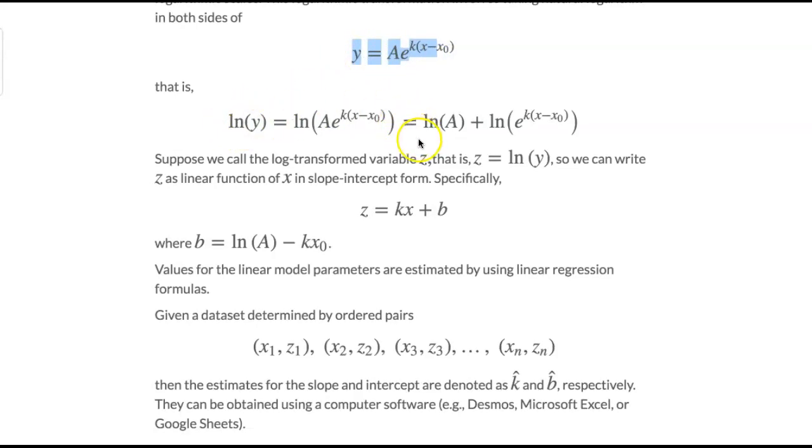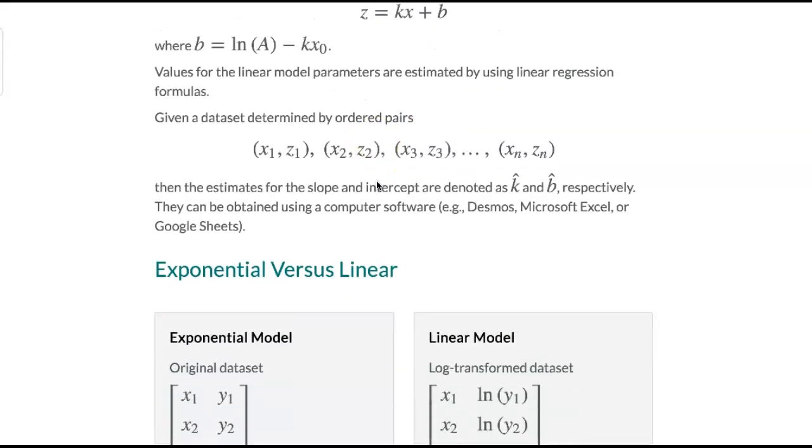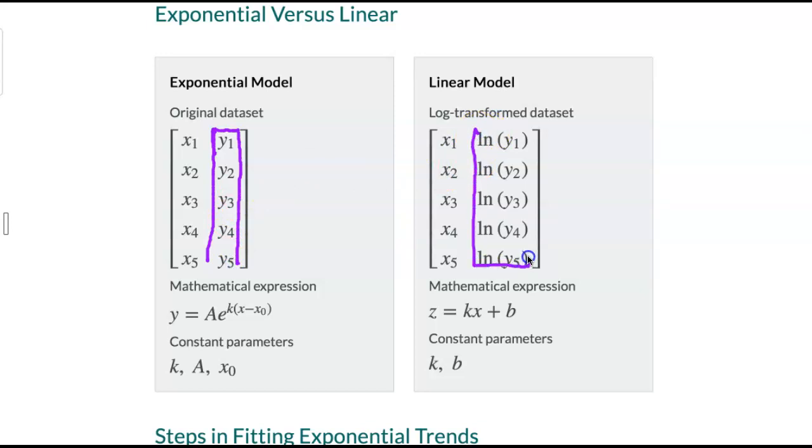In this case, the observations are stored in the second column of the dataset. If we transform those observations, which is what we're illustrating here, we'll be working in a different scale. For those transformed measurements, we are going to use a linear model.